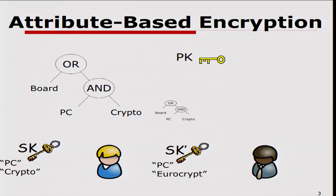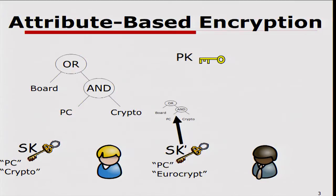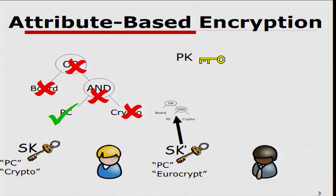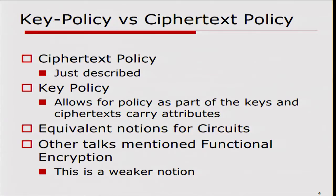A program committee member for crypto who would like to decrypt this message tries to decrypt using his secret key. He satisfies the policy, so he should be able to decrypt it. On the other hand, if we have a malicious Eurocrypt PC member who actually tries to decrypt this message, since he doesn't satisfy the policy, we don't want him to be able to decrypt it.